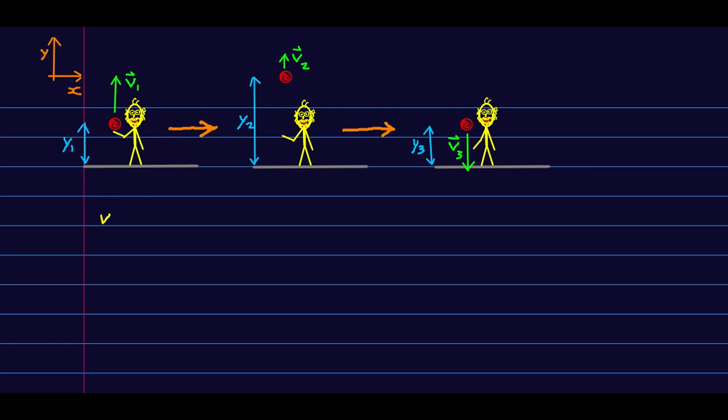And so for one thing, we should be able to say that V2 squared, let me label this time as my initial and this time as my final, and use UAM. So V2 squared should be V1 squared plus 2A delta Y, right? So Y2 minus Y1.